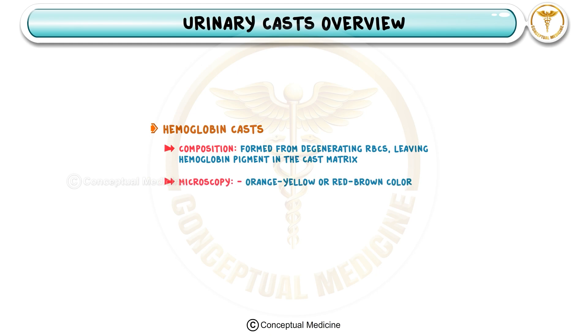Microscopically, hemoglobin casts have an orange-yellow or red-brown color. Their presence is a strong indicator of intravascular hemolysis, where red blood cells are destroyed in the bloodstream releasing free hemoglobin.